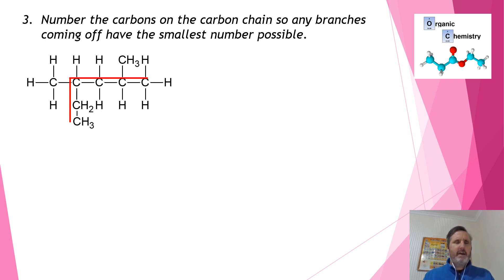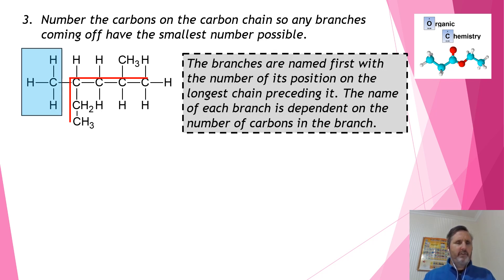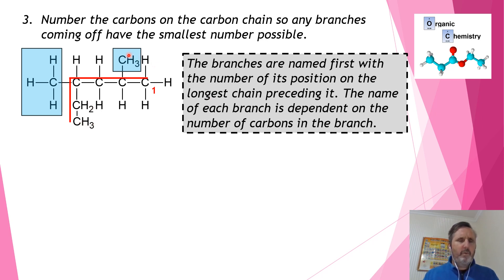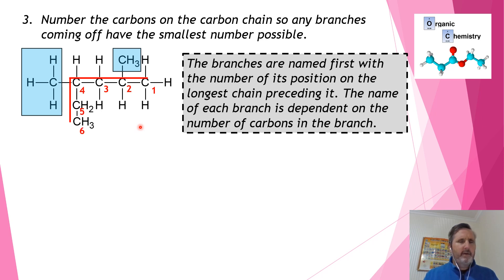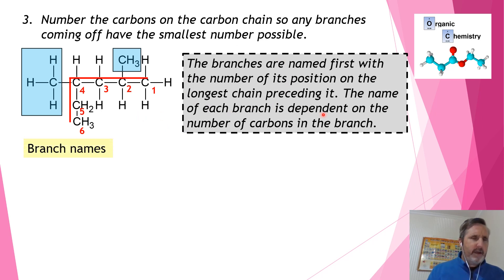Now that we know the main chain is hexane, we can start naming the branches that come off it. I need to put numbers on the chain to give an address for where the branches come off. I can either start numbering from the bottom — one, two, three, four, five, six — which gives positions three and five, or number from the right, giving positions two and four. Since two and four are smaller than three and five, we use that numbering to give the smallest possible locant numbers.